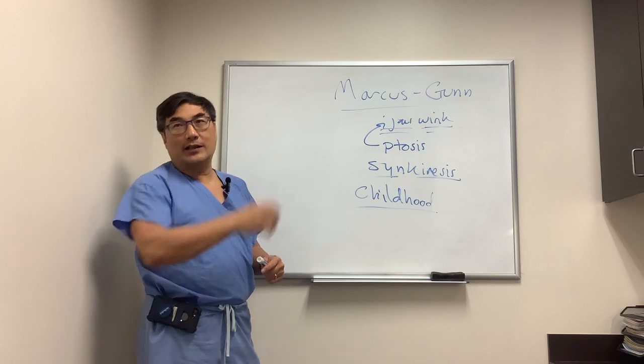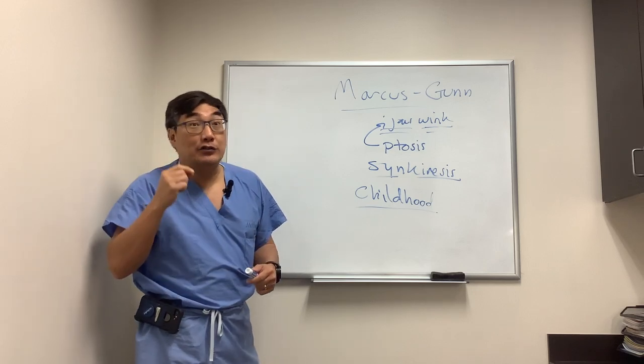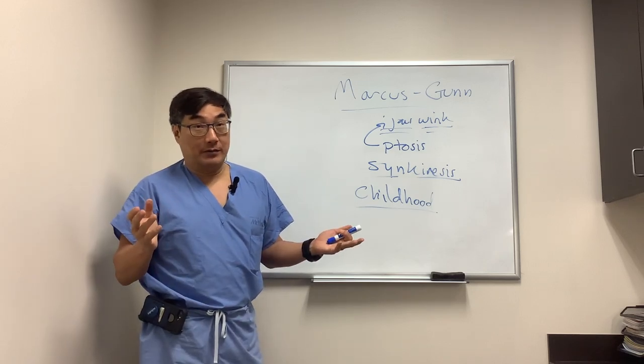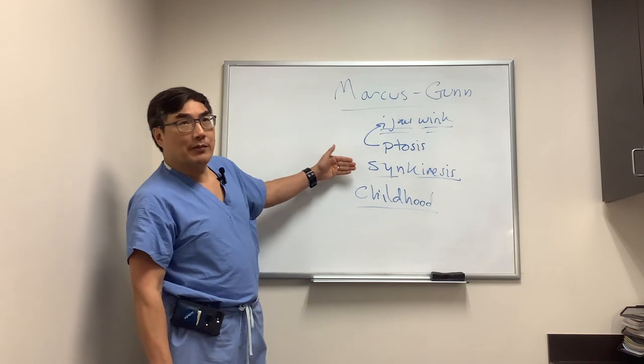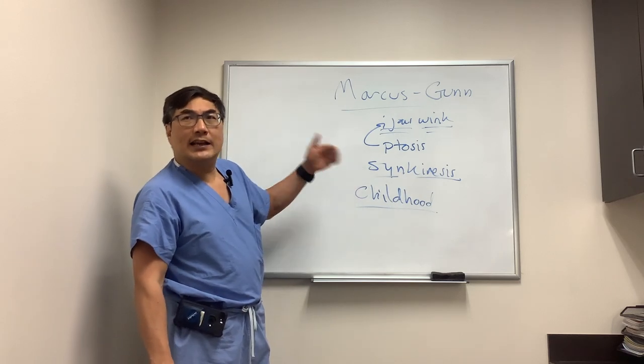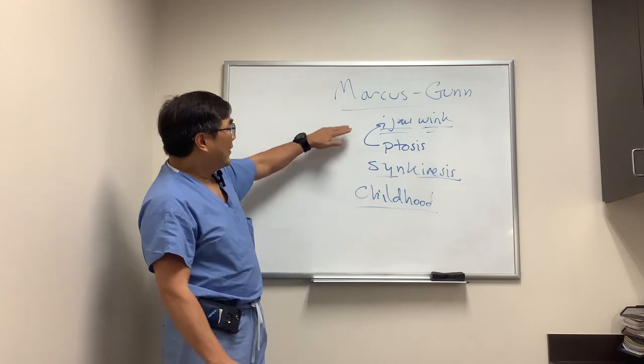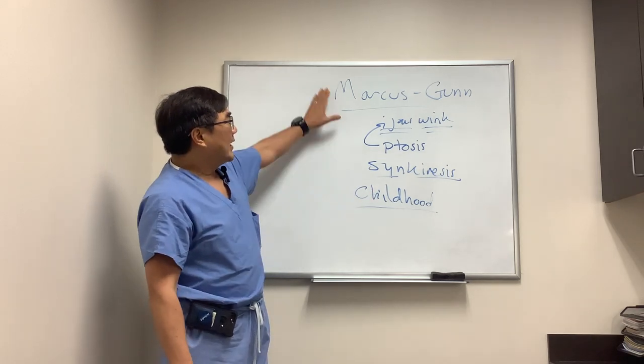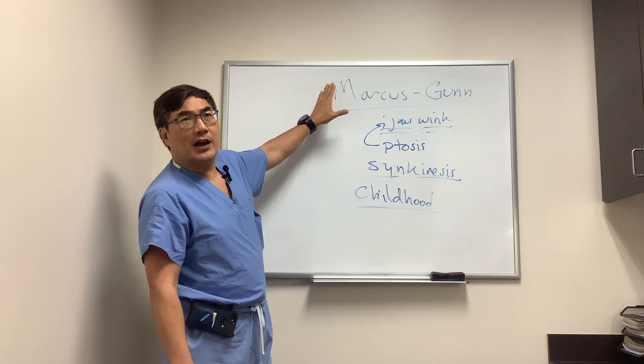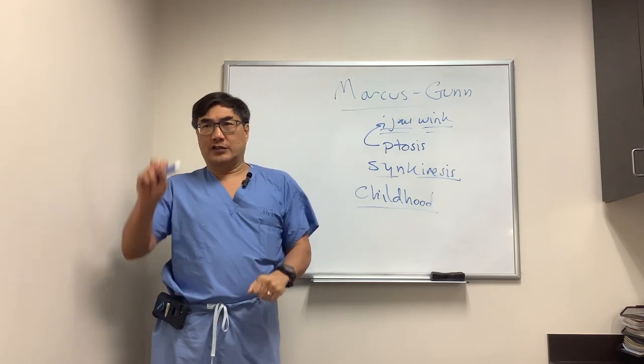When we tell patients in the clinic to open your eyes real wide, they often open their mouth. So I think there probably is a primitive synkinetic jaw to eye connection that fades over time. If it doesn't, that synkinesis is called the Marcus Gunn jaw-winking phenomenon between cranial nerves three and five.